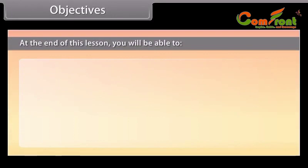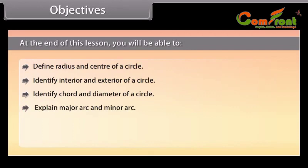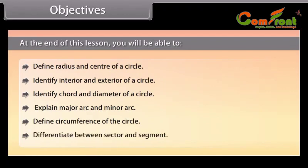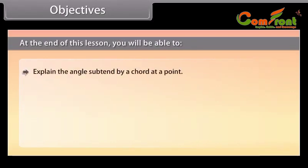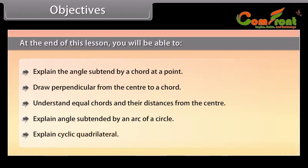Objectives. At the end of this lesson, you will be able to: define radius and center of a circle; identify interior and exterior of a circle; identify chord and diameter of a circle; explain major arc and minor arc; define circumference of the circle; differentiate between sector and segment; explain the angle subtended by a chord at a point; draw perpendicular from the center to a chord; understand equal chords and their distances from the center; explain angle subtended by an arc of a circle; and explain cyclic quadrilateral.